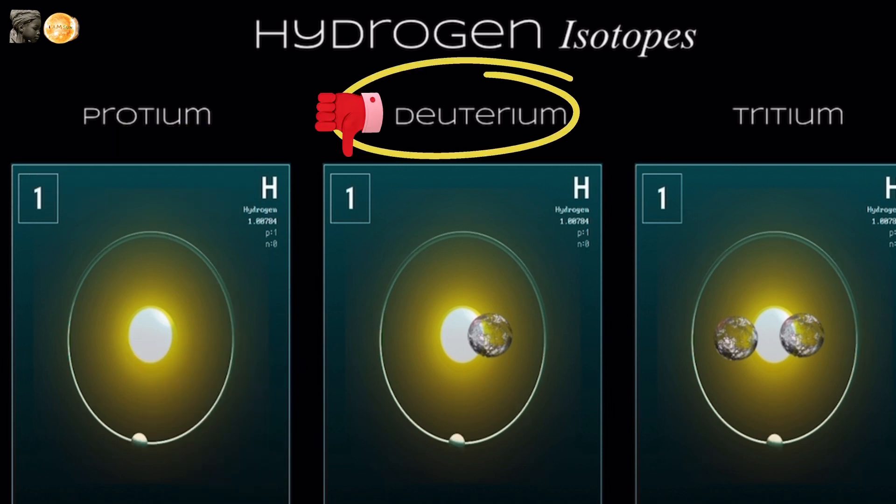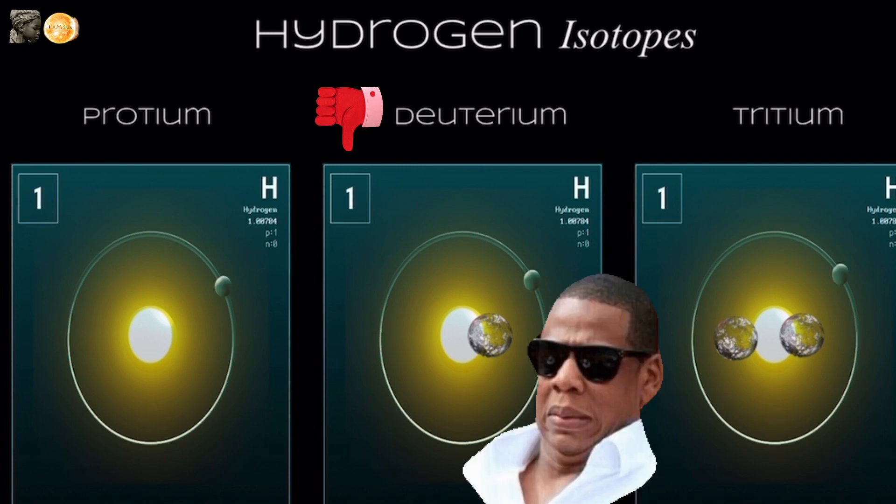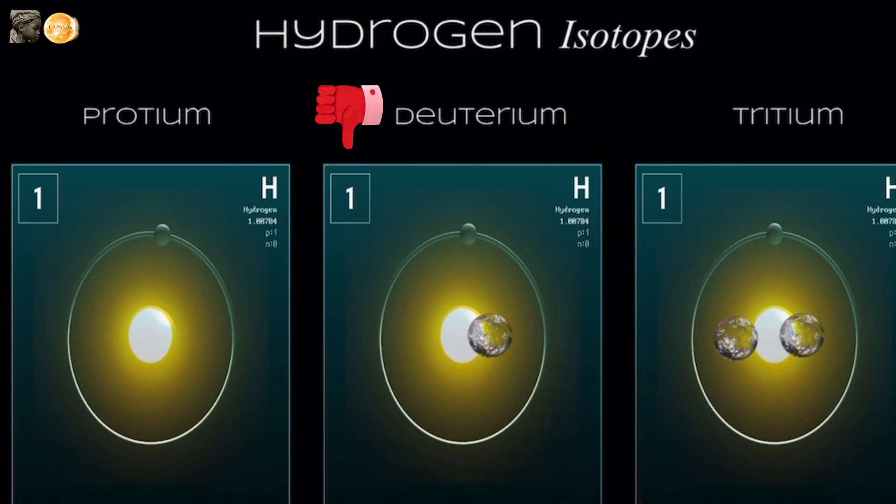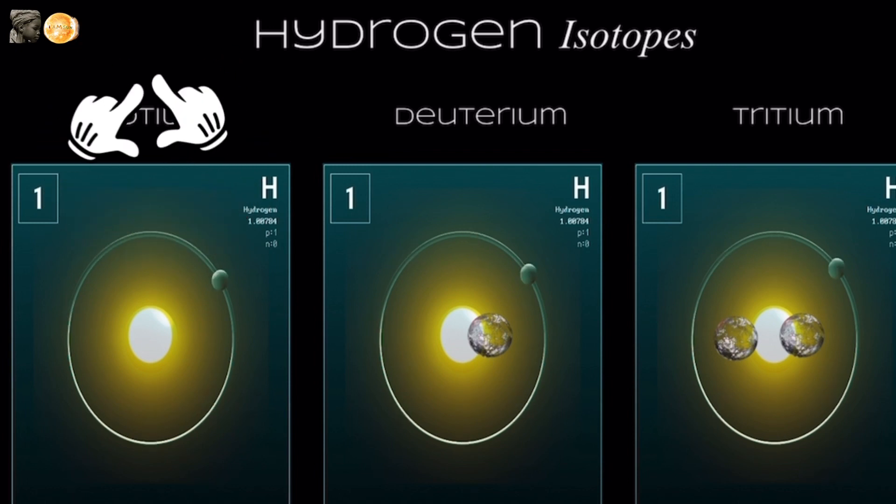The deuterium isotope of hydrogen is actually not that desirable at all to animals and plants. It's easily unstable at elevated temperatures and pressures, so we like to keep our hydrogens having no neutrons.